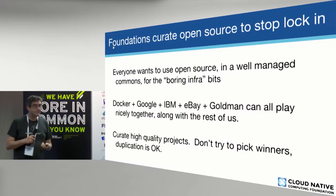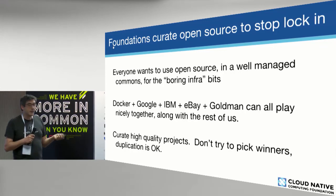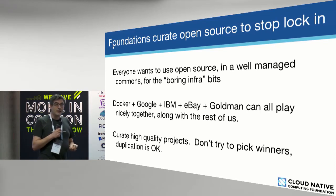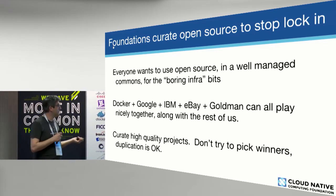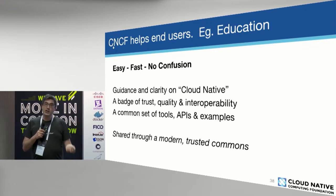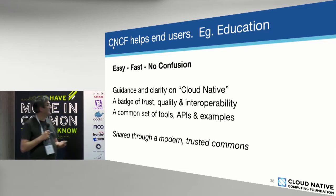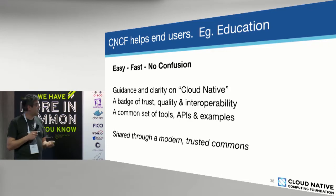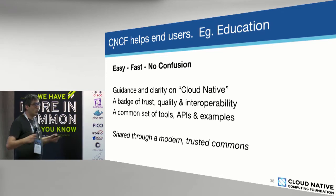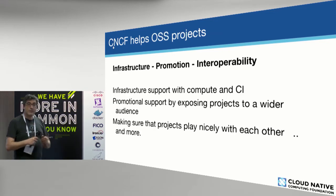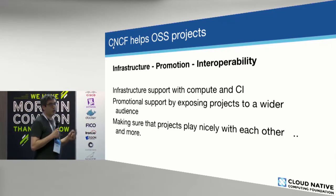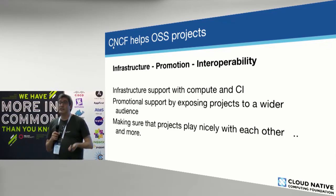We curate open source in a way that everybody can use — Docker, Google, IBM, eBay, and Goldman can all play nicely together, which is amazingly new. We look for high quality — that's the job of the TOC: to identify high-quality projects and the rules that go with those. We don't pick winners, we just pick quality and speed. We help end users through education and events, and provide guidance on what it means to be cloud native — a badge of trust and interoperability. We're project first, ultimately: good projects get good users, make them happy, and that makes the project successful.